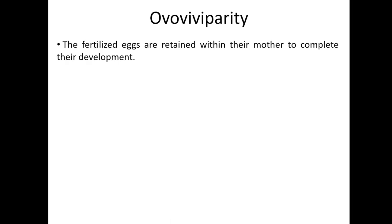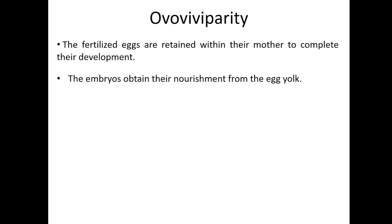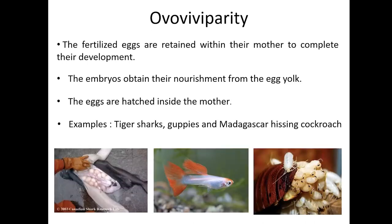Ovoviviparity is a mode of reproduction in animals in which embryos that develop inside eggs remain in the mother's body until they are ready to hatch. During development, the young depend on stored yolk for their nourishment. The eggs hatch inside the mother's body and the young are born after hatching. Some examples of ovoviviparous animals are the tiger shark, guppy fish, and Madagascar hissing cockroach.